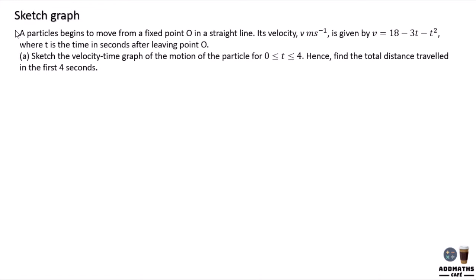Sketch graph. A particle begins to move from fixed point O, and this is the velocity equation. To sketch the velocity-time graph, first put in the time in seconds, which is 0 to 4. So it will be 0, 1, 2, 3, 4.